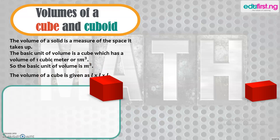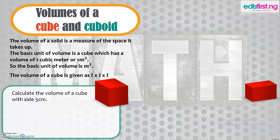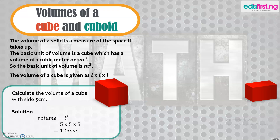Let's have an example to understand how to calculate the volume of a cube. Calculate the volume of a cube with side 5 cm. Solution: volume is L cubed, so we simply multiply 5 × 5 × 5 to give us 125 cm³. That's the volume of a cube.